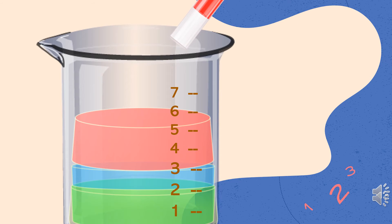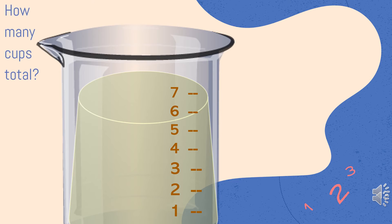What do we have total? Two plus one plus three would give us how many total cups? That's right. Six cups. Two plus one plus three equals six.